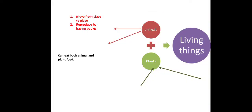In my previous video, we had studied about the living things. The two important groups are animals and plants. We also studied that animals and plants are different — they are not the same. Though they belong to the group of living things, they are different.